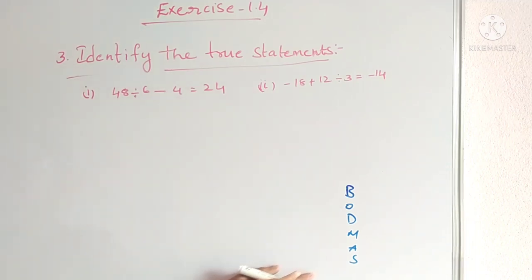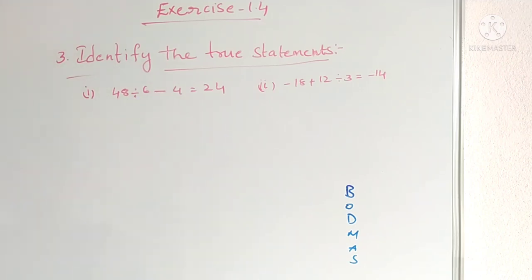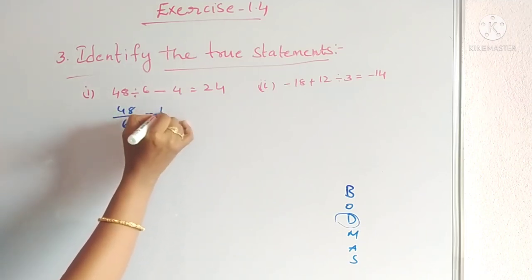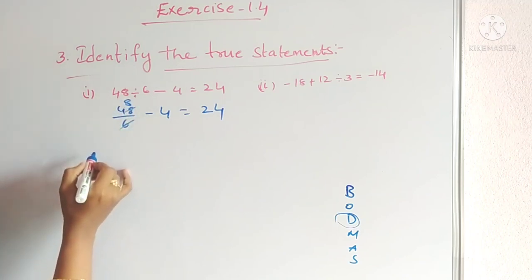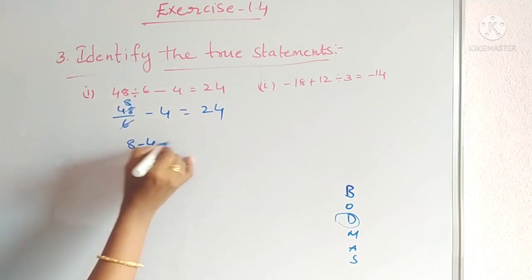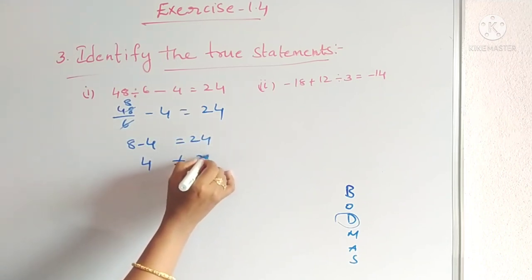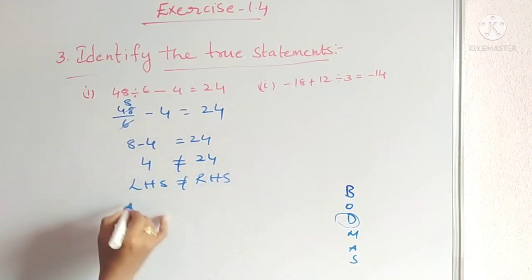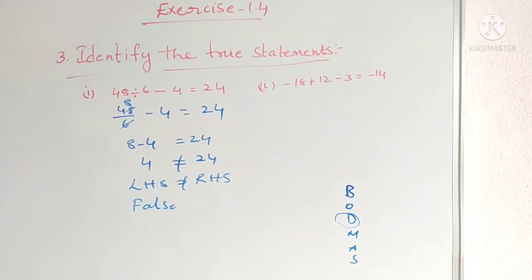First statement: 48 ÷ 6 − 4 = 24. Division and subtraction are there, so first do division: 48 ÷ 6 = 8. Then 8 − 4 = 4. So LHS = 4, but RHS = 24. LHS ≠ RHS, so this is FALSE.